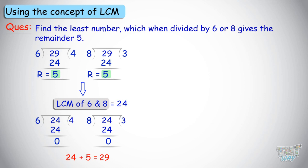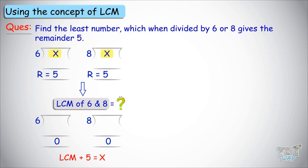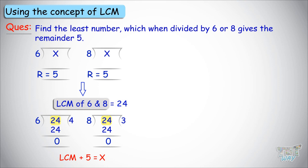What was the question? We needed to find a number which, when divided by 6 and 8, leaves a remainder of 5. We did that by finding the LCM of 6 and 8, which gave us 24 — the least number divisible by both 6 and 8. To find the number that gives remainder 5, we added 5 to 24 to get 29. We verified that dividing 29 by 6 and by 8 both give a remainder of 5.